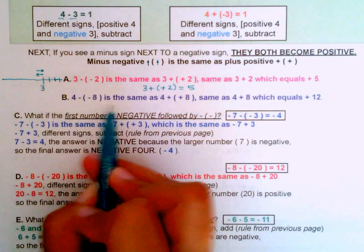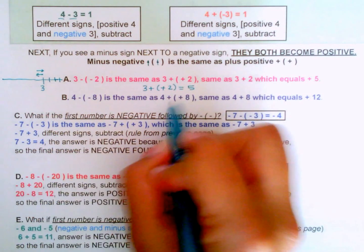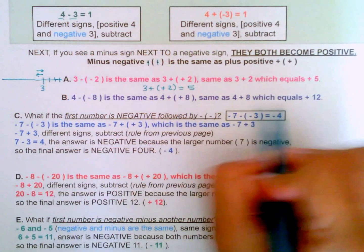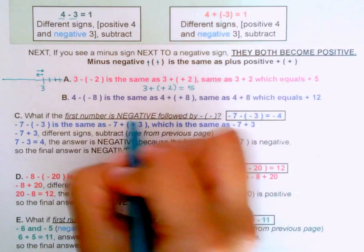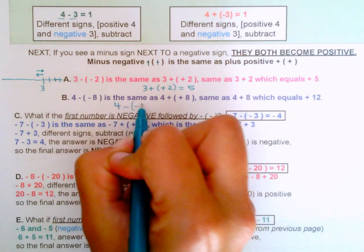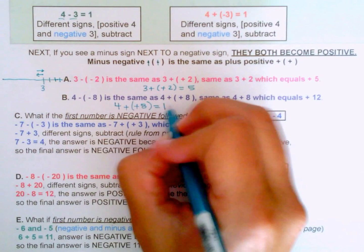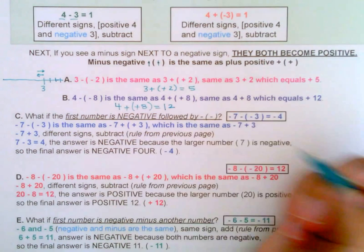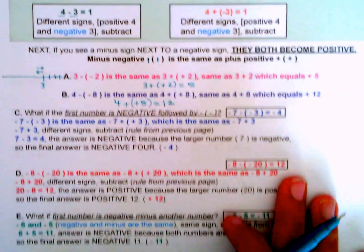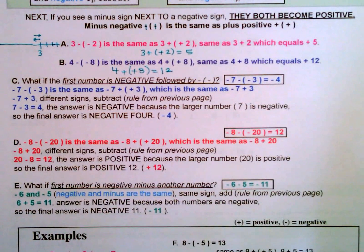Example B: same situation — four minus negative eight. Those both become positive, which is four plus eight, which equals positive twelve. So four minus negative eight equals twelve.